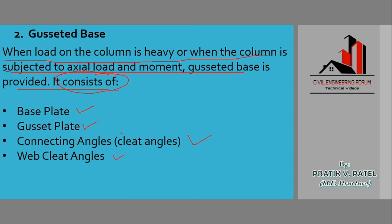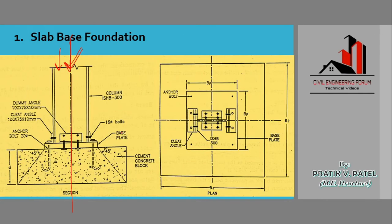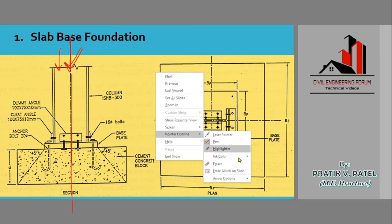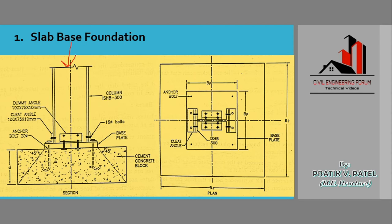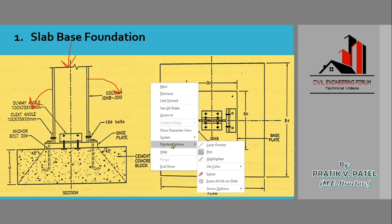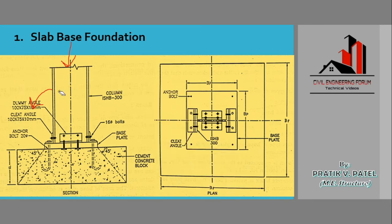Before looking at the diagram for gazetted base foundation, I'll explain its working from the slab based foundation figure. When the axial load is very heavy or there is a moment, the slab based foundation might turn over or get deflected. So we use a gazette plate, connecting it so that it gets support up to that level — this is how the gazetted base foundation works.